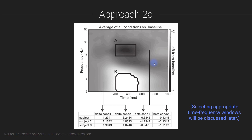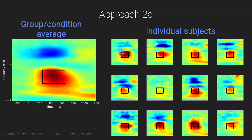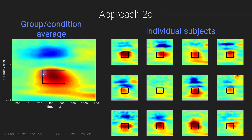Instead, you go right for the specific regions of interest that you have hypotheses for — maximal sensitivity to potentially small effects. The main disadvantages of Approach 2A are: first, there is a potential for bias when selecting the time-frequency window; and second, you are open to missing important but unpredicted results — because your theory says this region is important, but maybe a different region is actually the most important thing in the data.